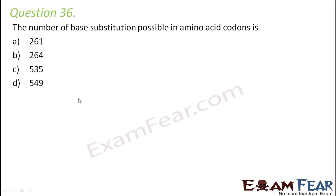Question number 36: The number of base substitution possible in amino acid codons is 261, 264, 535, or 549. Before we start solving this question, what do we mean by base substitution? Base substitution refers to the phenomenon in which a nitrogen base is changed with another nitrogen base.